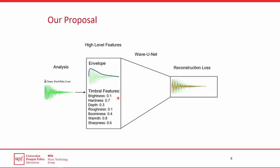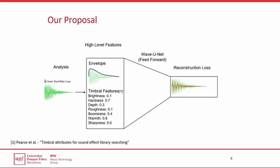The timbral features we used are the brightness, the hardness, the depth, the roughness, the boominess, the warmth, and finally, the sharpness of a sound, together with the sound envelope. These are all features which music makers are able to understand, despite their music production knowledge.